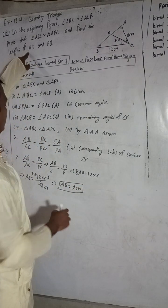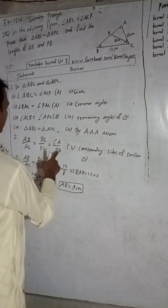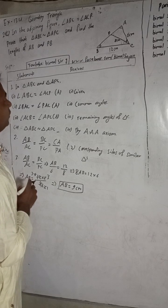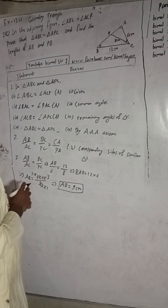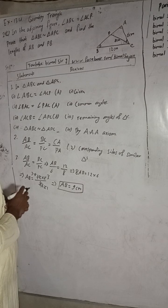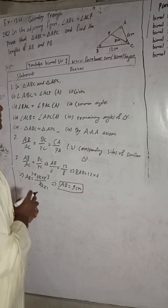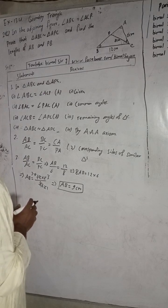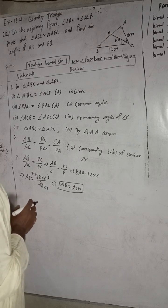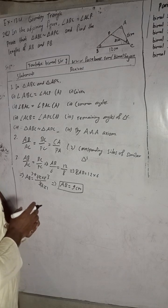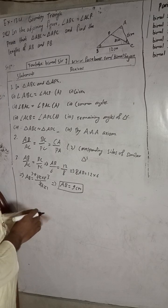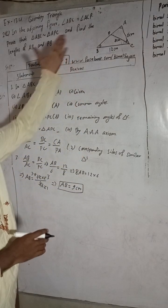One answer we got. Now we have found AB. Now we have to find PB. So PB we have to find. To find PB, we have to use the similar triangle relationship.